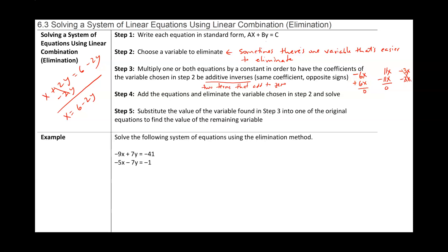Then in step four we add the equations and eliminate the variable, because we have additive inverses like negative 6 and positive 6, or 11 and negative 11 — they're going to add to zero. So we add the equations, eliminate the variable from step two, and then we'll get to step five later. Let's take a look at an example.